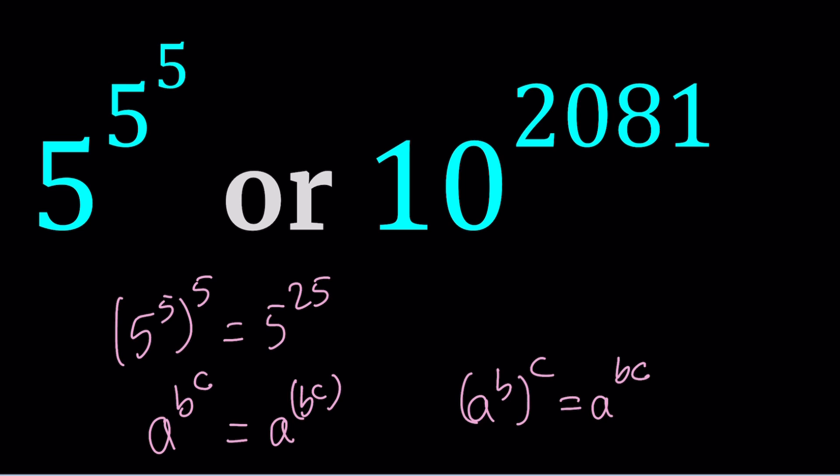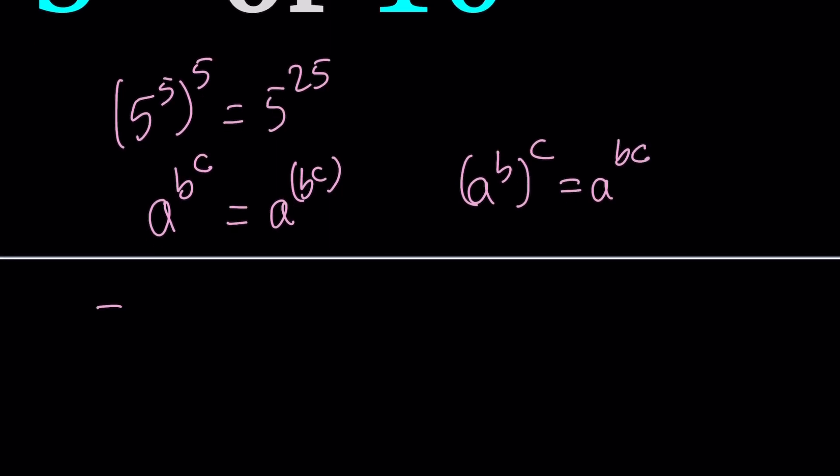Now, first of all, since we said that's the intended meaning of 5 to the power 5 to the power 5, we can turn it into something nicer because we can evaluate 5 to the 5th power. It's not too hard. It's not super bad. You hopefully know at least 5 to the 2nd, or maybe even 3rd or even 4th.